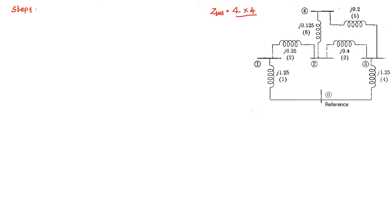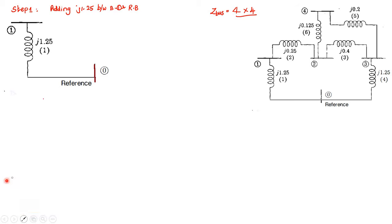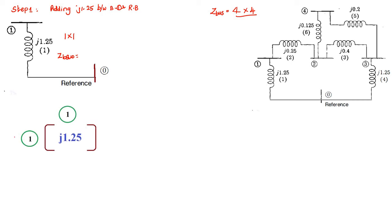Step number one is adding J1.25 between Bus1 and the reference bus. Here 1.25 is added between Bus1 and the reference bus. What is the order of the matrix? The matrix consists of only one element, so the order of the matrix is one cross one. This is the representation of Z-Bus with only one element.